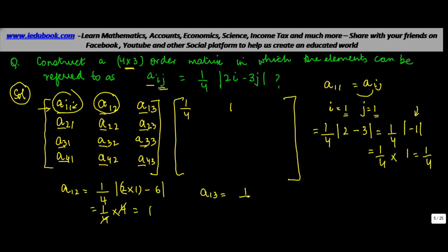For a₁₃: i = 1 remains constant, j = 3 because this is the third column. So (1/4)|2×1 - 3×3| = (1/4)|2 - 9| = (1/4)|−7|. Coming out of modulus it becomes +7, giving 7/4. So a₁₃ = 7/4.